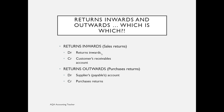We need to keep a separate log of our returns so we can monitor how much is being returned by customers — there might be a quality problem, and returns involve cost to us if we have to restock, or they might indicate a problem with our supplier. For the double entry on sales returns, we debit returns inwards — a separate T-account from the sales account — and credit the customer's account, so the trade receivable account is credited to reduce the amount the customer owes us.